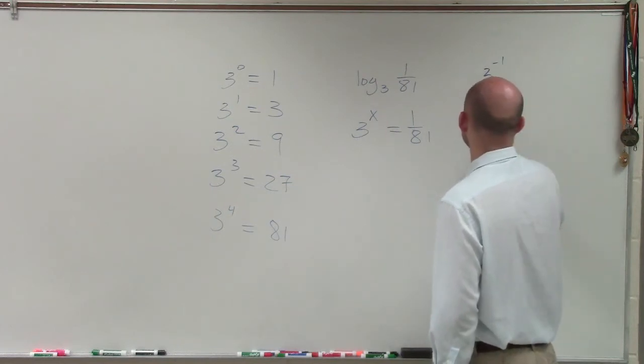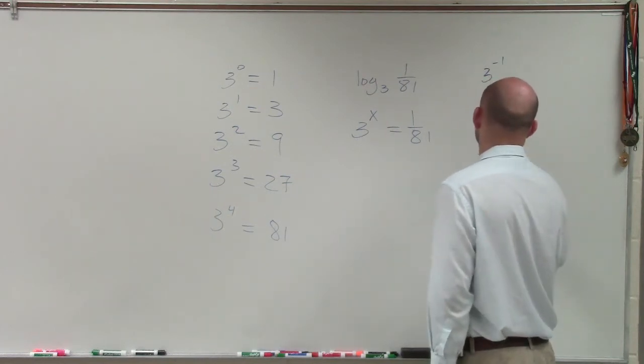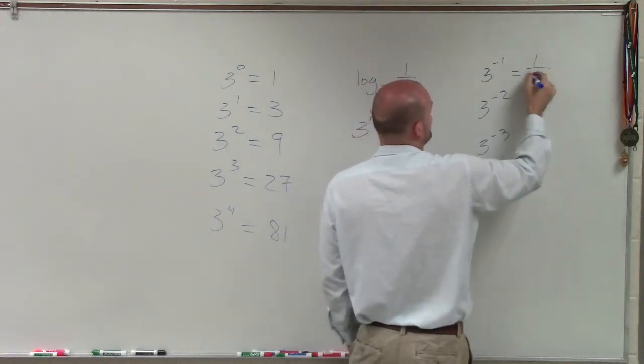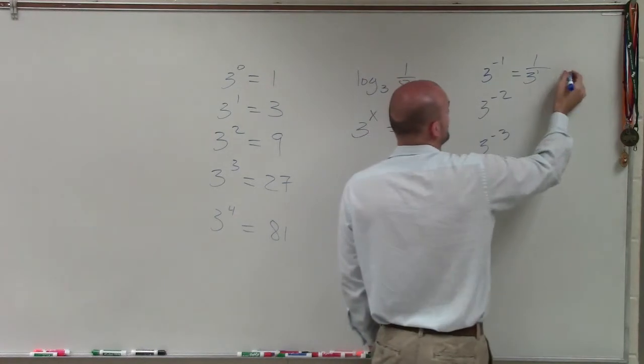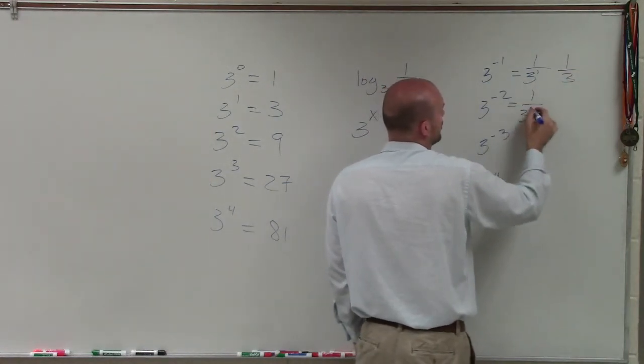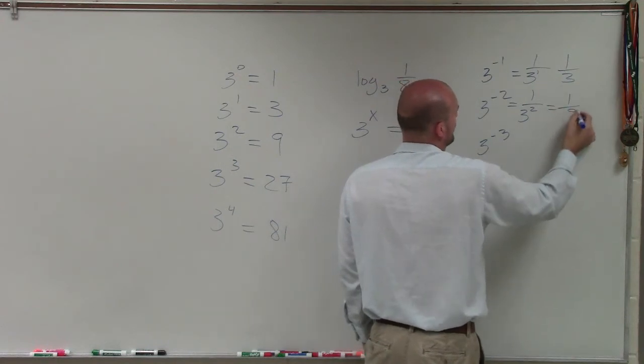What's nice about negative numbers is when you write them, remember 3 to the negative first is the same as 1 over 3 to the positive first, which equals 1 third. This is 1 over 3 squared, which is 1 ninth.